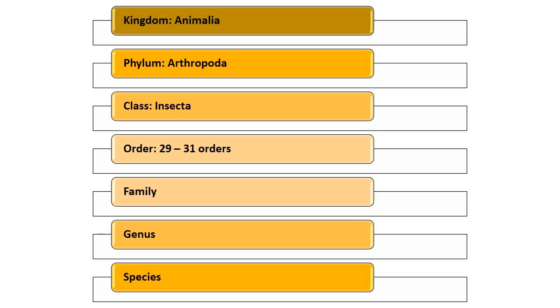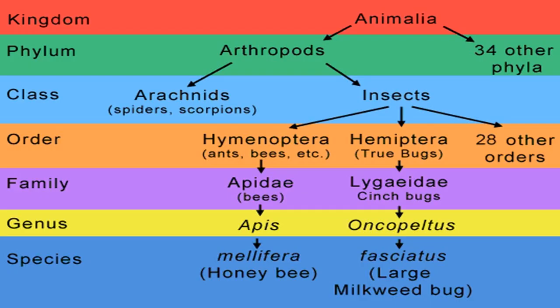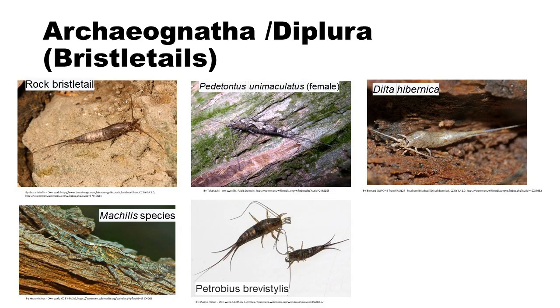The following are the orders that are placed under class Insecta. Taxonomy is a changing field, and therefore orders, suborders, families, and subfamilies are being formed based on phylogenetic relationships or any of the taxonomic approaches discussed. This is the general list of orders found in class Insecta.